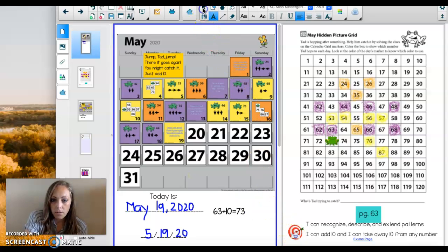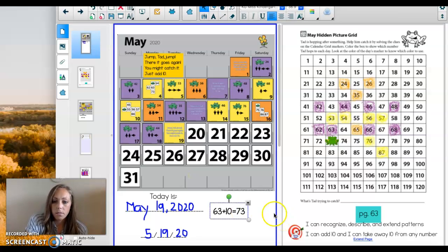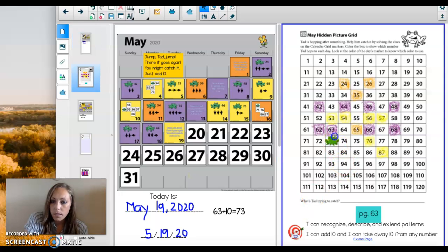Try to beat me in writing it out. He started on the 63. His number got higher so he added. How many did he add? 10. Equals 73. Did you write 63 plus 10 equals 73? I hope so.